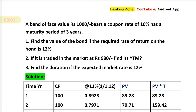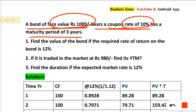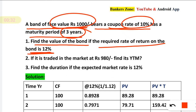Hello friends. See, what is the problem they have given? A bond of a face value 1000 bears a coupon rate of 10% and has a maturity period of three years. So face value is 1000, coupon rate is 10%, and maturity is three years. They are asking: find the value of the bond if the required rate of return is 12%. We have to find the value of the bond.